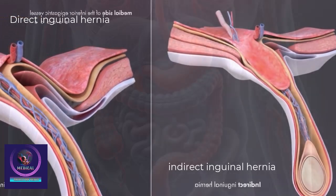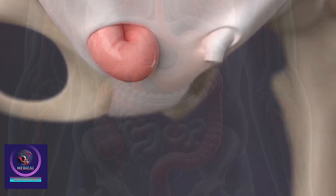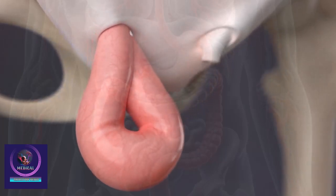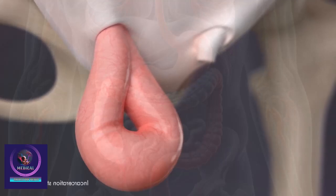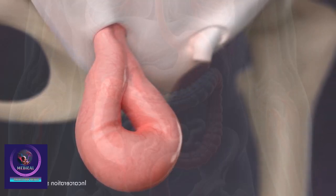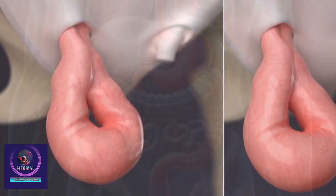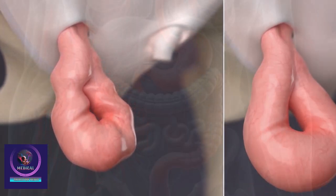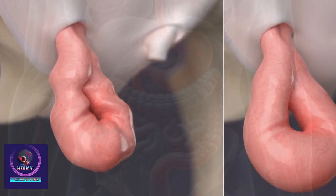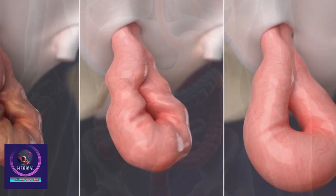Sometimes while watchfully observing without surgery, the intestine comes down into the hernial sac, and this can lead to an incarceration state in which it does not return to the abdominal cavity. In severe cases, it progresses to a strangulation state, a condition in which blood flow does not occur. If the intestine does not return to the abdominal cavity very quickly, intestinal necrosis occurs.